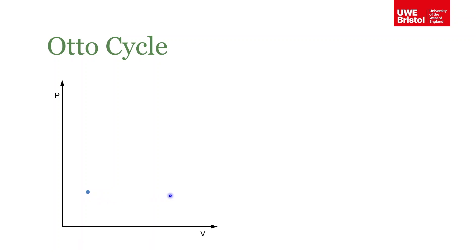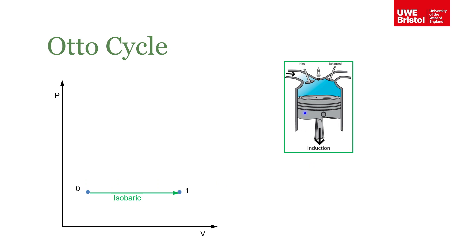This is top dead centre, right at the top. The first thing we have is an induction stroke — the piston will move down in the cylinder, the inlet valve will be open, and we draw fresh air and fuel into the cylinder. Thinking of an ideal cycle, this process would be isobaric — no change in pressure, the air just flows into the cylinder. This continues until the piston reaches bottom dead centre, or maximum volume, and this is now state one.